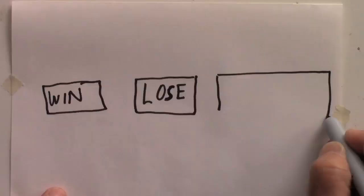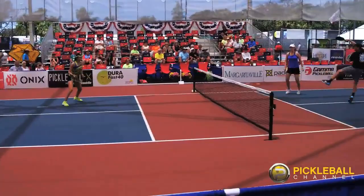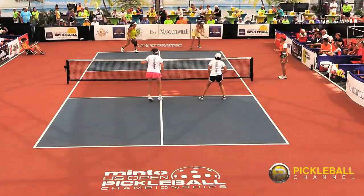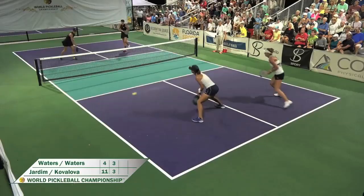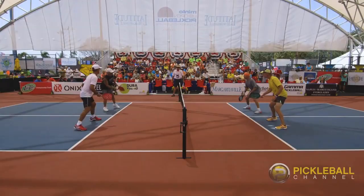Lob outcomes can go into three categories. First, the lob leads clearly to a loss of the rally by either going out of bounds or by being smashed back for a winner. Even at the pro level, lobs go out of bounds about 20% of the time. They get smashed back for a winner about 30% of the time.